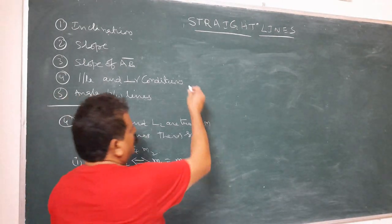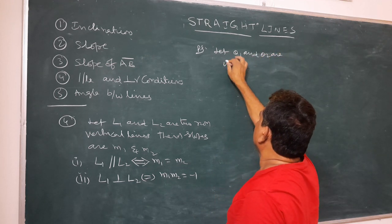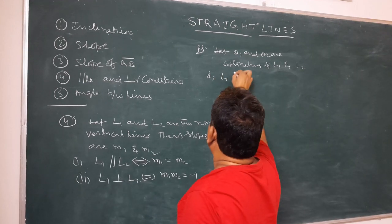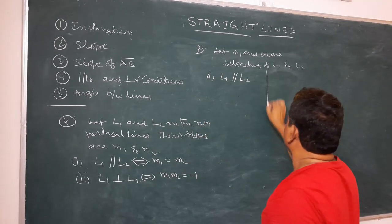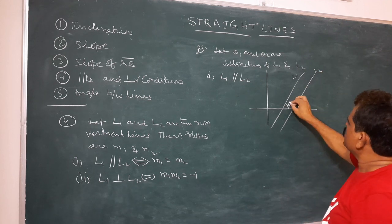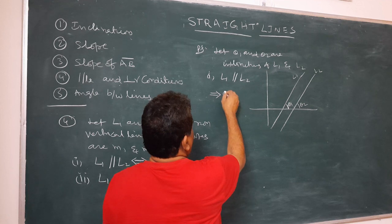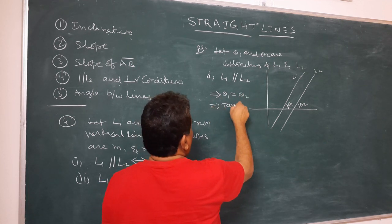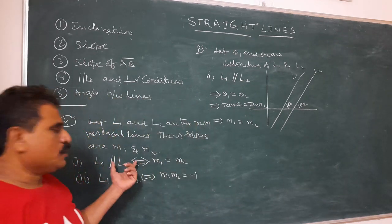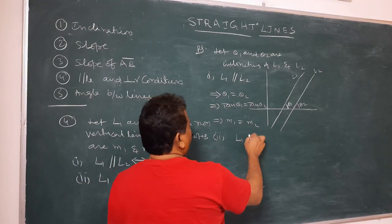Proof: Let θ₁ and θ₂ be inclinations of l₁ and l₂. First, if l₁ is parallel to l₂, then their inclinations are equal: θ₁ = θ₂. This implies tan θ₁ = tan θ₂, which implies m₁ = m₂. The first proof is complete.